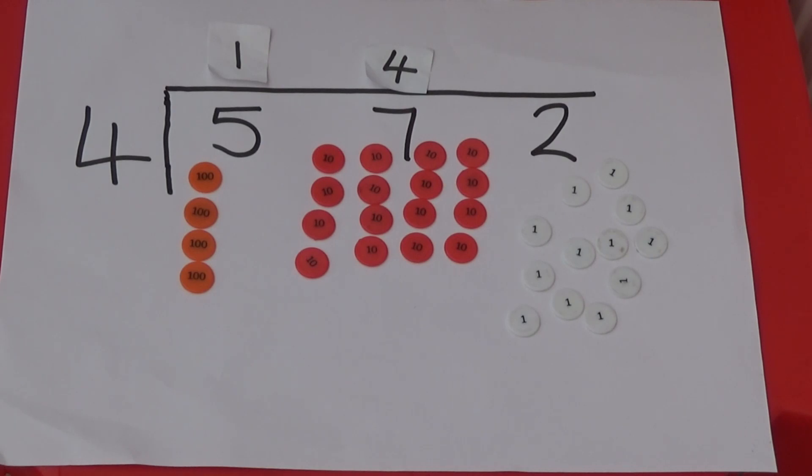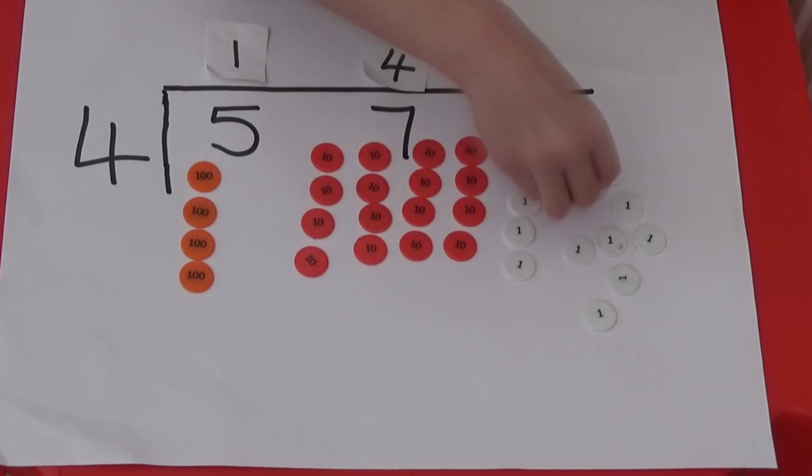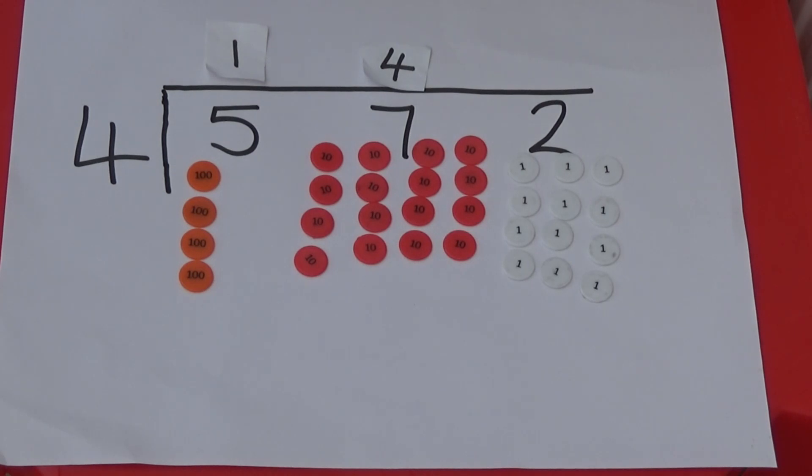We now have twelve 1s which I need to put into groups of 4. 12 divided into groups of 4 makes 3 groups so I am going to put 3 above the line. So 572 divided by 4 equals 143.